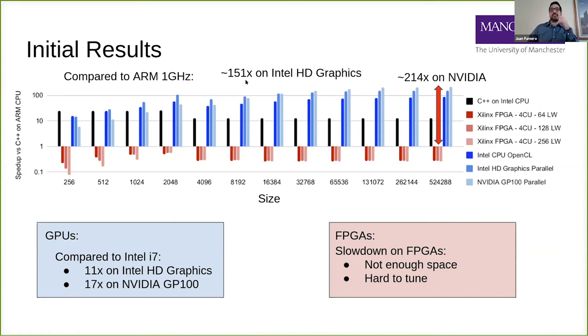The first bar shows speedup against ARM by running the C++ interpreter, our baseline. Then the rest are GPUs and FPGA. Let's focus on this number. The execution on NVIDIA is 200x compared to ARM and 150x compared to Intel. If we compare against the Intel C++ baseline compiler interpreter, we get 10 times faster when using Intel graphics and 17x compared using the NVIDIA GP100. We go from slowdown 1000x to 20x almost. That's great.